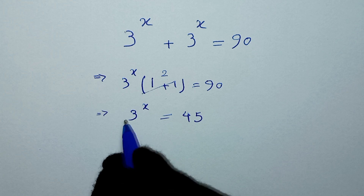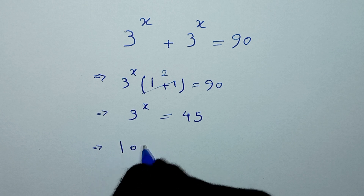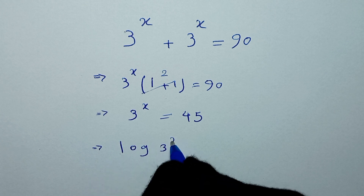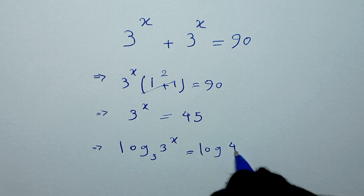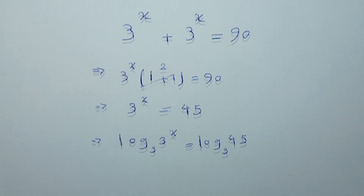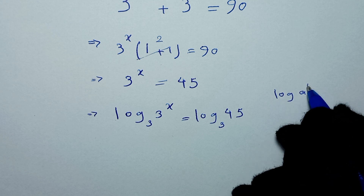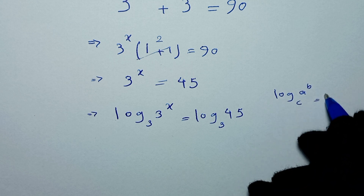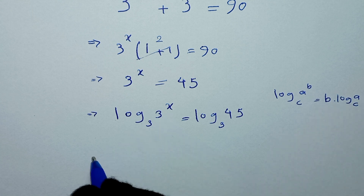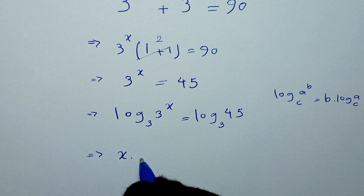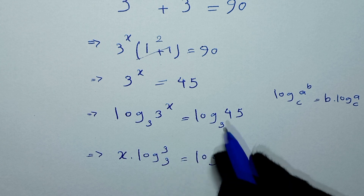In the next step we apply log of base 3 to both sides of this equation. This gives log of 3 to the power of x, to base 3, is equal to log of 45 to base 3. From the log rule, log of a to the power of b, to base c, equals b times log of a to base c. So here it will be x times log of 3 to base 3 is equal to log of 45.